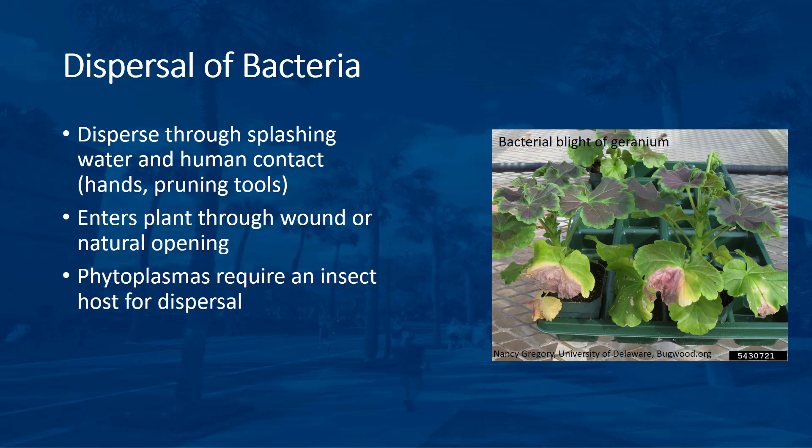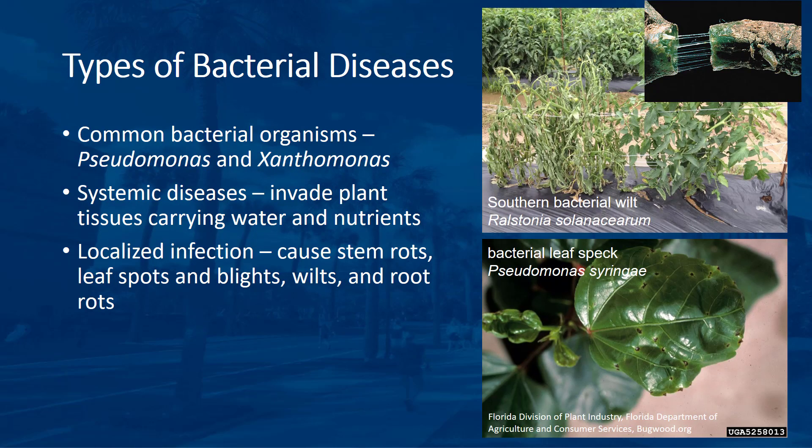A special subgroup of bacteria called phytoplasmas require an insect host for dispersal and entry into the plant. Pseudomonas and Xanthomonas are common bacterial organisms that cause disease in plants. Bacterial diseases can be divided into two types: systemic and localized. Systemic bacterial diseases can invade plant tissues that carry water and nutrients, and the disease spreads throughout all parts of the plant, like southern bacterial wilt of tomato. Under certain conditions, the bacterial pathogen may grow in only one area of the infected plant. This localized infection can cause stem rots, leaf spots and blights, wilts, and root rots.